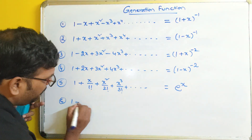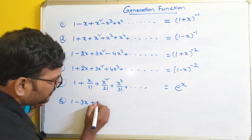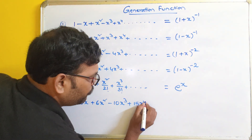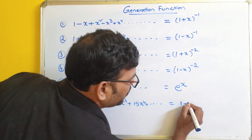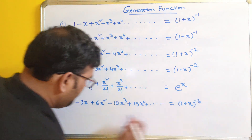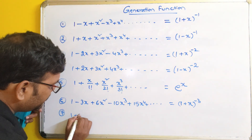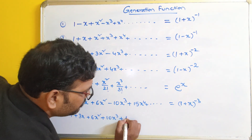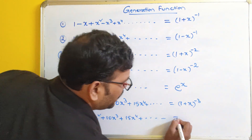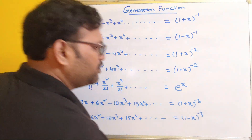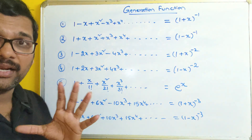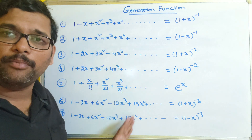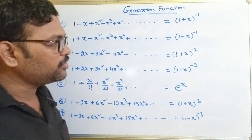There are a few more formulas. If the sequence is 1 minus 3x plus 6x² minus 10x³ plus 15x⁴ and so on, that is written as (1 plus x)⁻³. Similarly, 1 plus 3x plus 6x² plus 10x³ plus 15x⁴ and so on gives (1 minus x)⁻³. There are many formulas; we apply the constants and check which formula is satisfied.